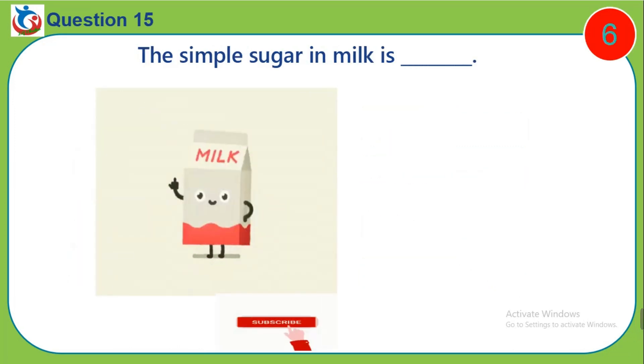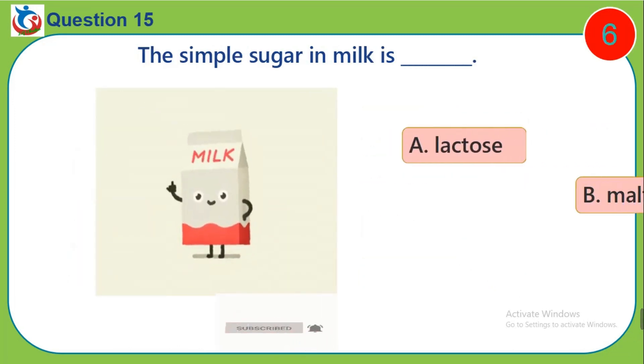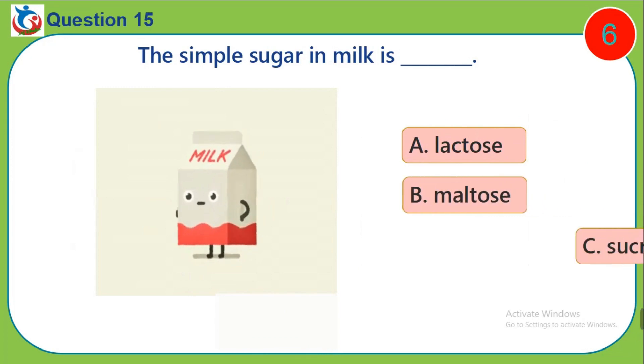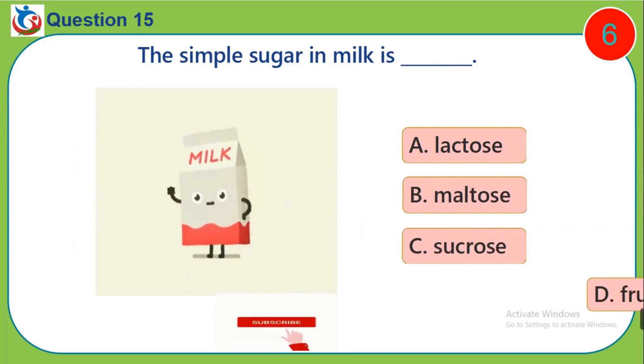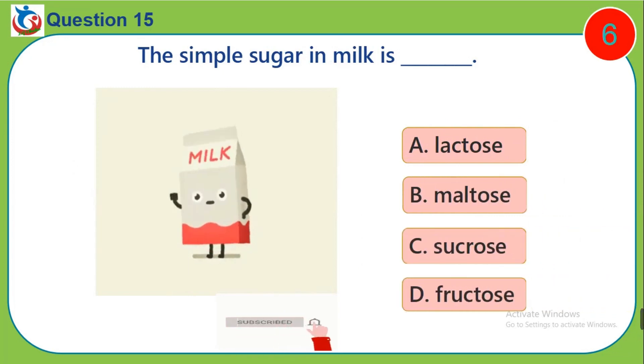Question 15. The simple sugar in milk is: A. Lactose. B. Maltose. C. Sucrose. D. Fructose.